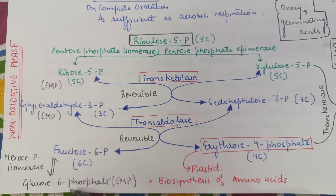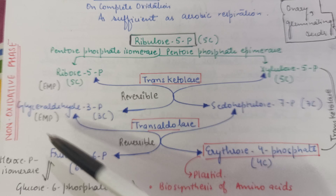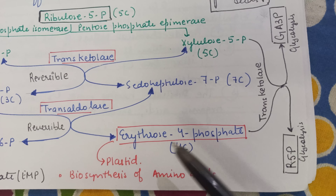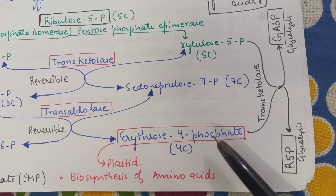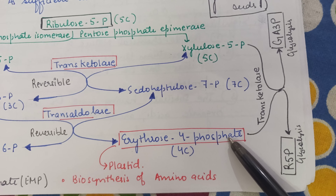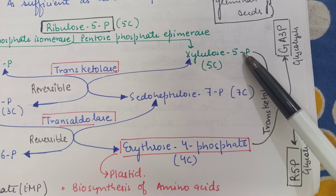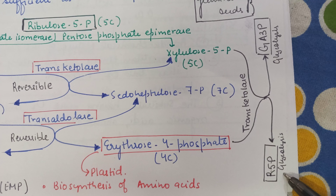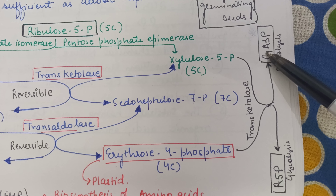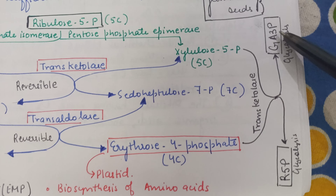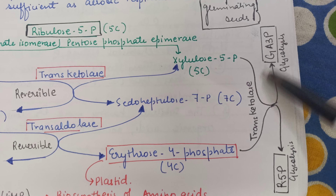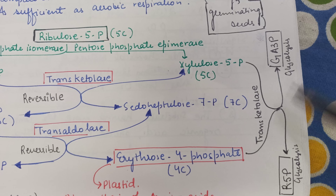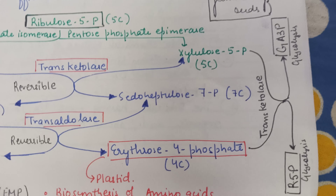This completes the non-oxidative phase. Erythrose-4-phosphate, when it combines again with xylulose-5-phosphate in the presence of transketolase, is converted into ribose-5-phosphate and glyceraldehyde-3-phosphate, both of which can again enter glycolysis.